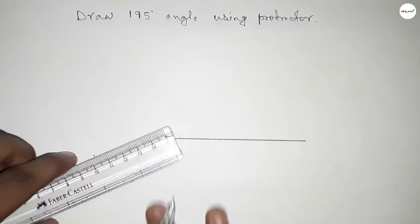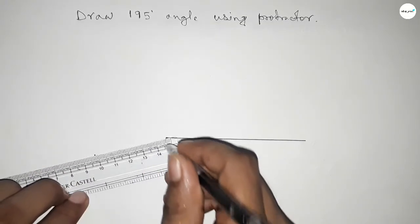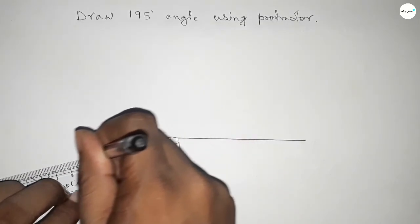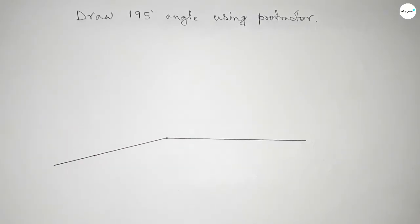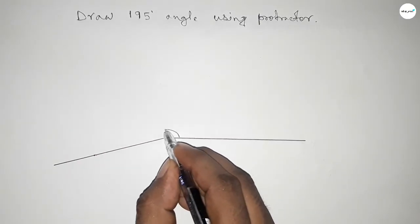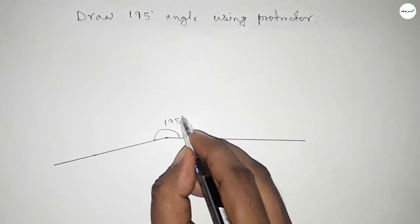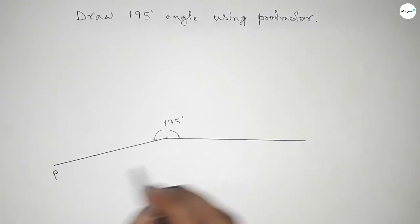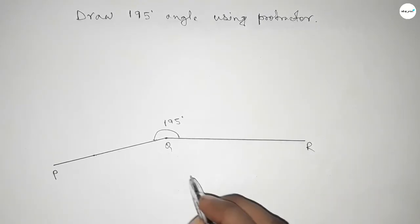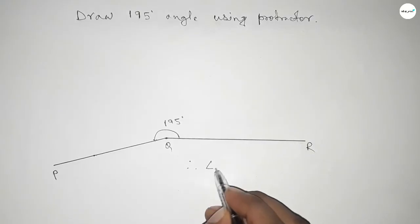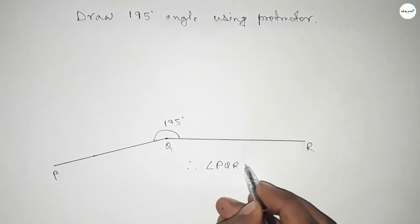If you add 180 degrees plus 15, then we can get 195 degree angle. So this is 195 degree angle. And this is P, Q, and R, so angle PQR equals 195 degrees.